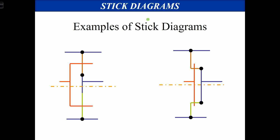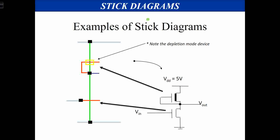For an NMOS inverter using a depletion mode transistor in the pull-up network: N diffusion crossing polysilicon with an implant represents the depletion mode transistor in the pull-up. The gate is connected to the output. In the pull-down network there is an NMOS enhancement mode transistor where the input is connected.